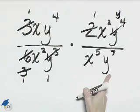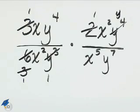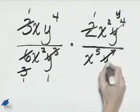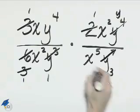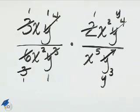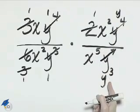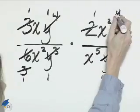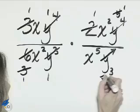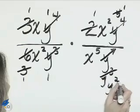We can also do y to the 7th and y to the 4th, where y to the 7th will be y to the 3rd and y to the 4th will become 1. And then the y here with y to the 3rd here can be simplified one more time, and this one will become y to the 2nd power.